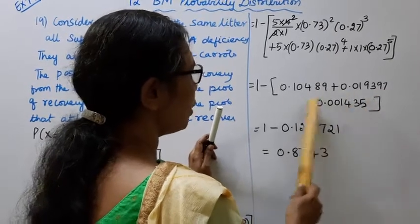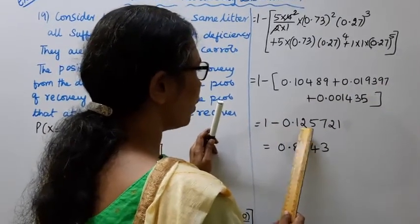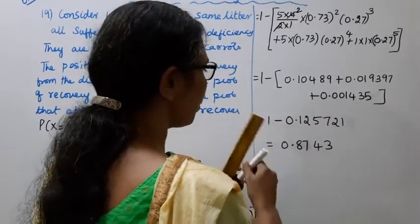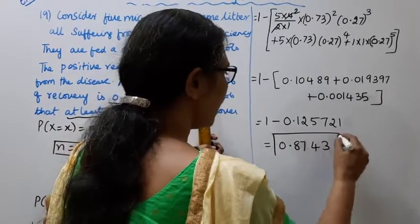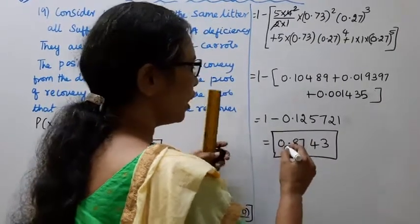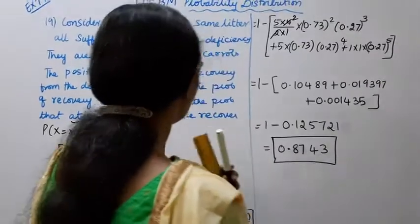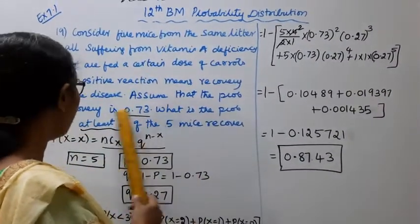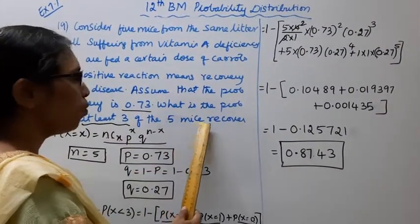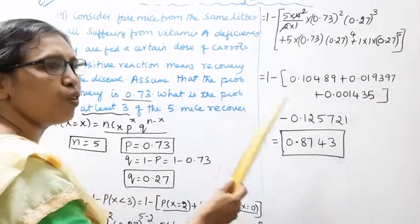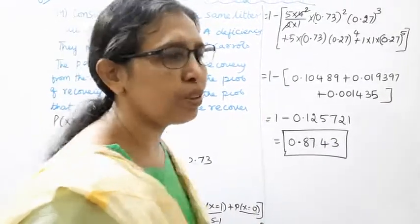Adding these values: 1 - 0.125721 = 0.8743. The probability that at least 3 of the 5 mice recover is 0.8743.